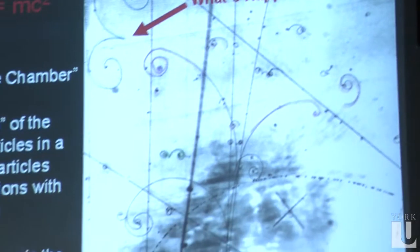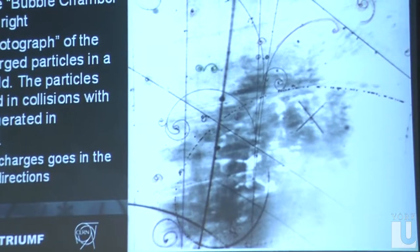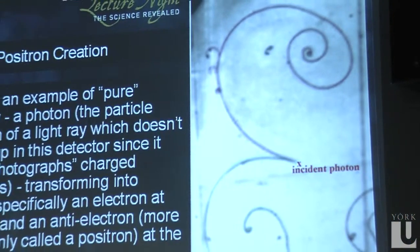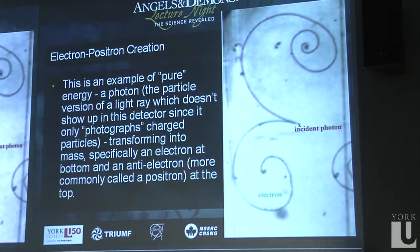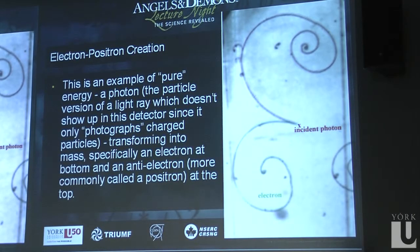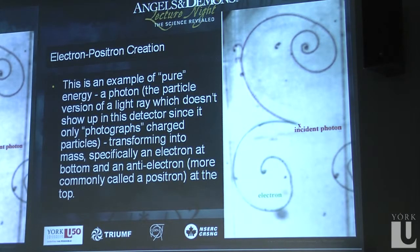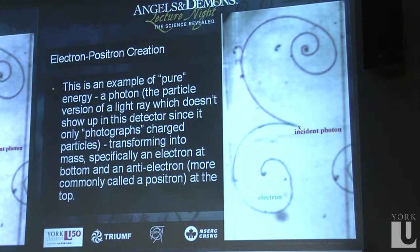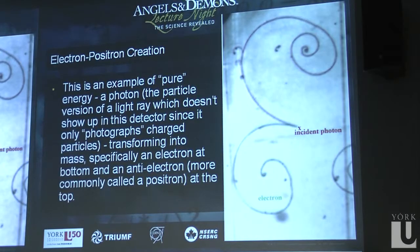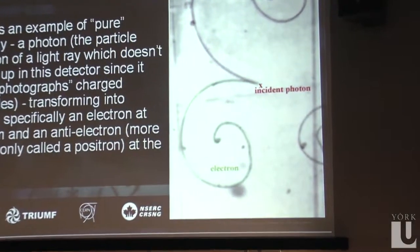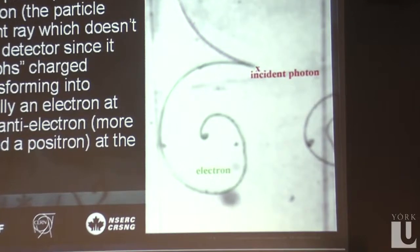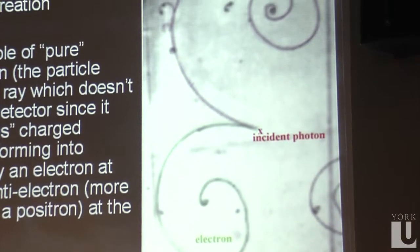I want to look more closely at what's happening on the top left. If I'm coming in from the bottom right, there's nothing — no track — which tells you it's something uncharged. That's a photon — the particle nature of light. So it's coming in and it transforms into a particle and an antiparticle. In this case, it transforms into an electron, which in this magnetic field curls down to the bottom, and a positron — an antielectron — which curls up to the top. So there it is, right in front of your eyes: the creation of antimatter. And in fact, this is happening all the time in this room.